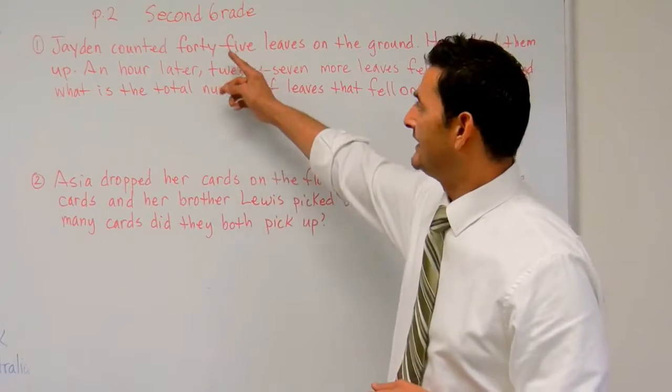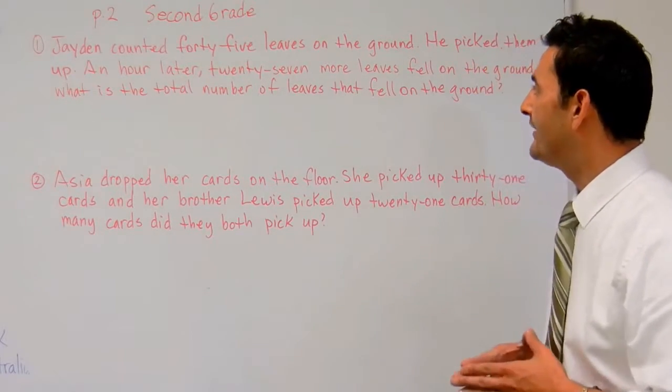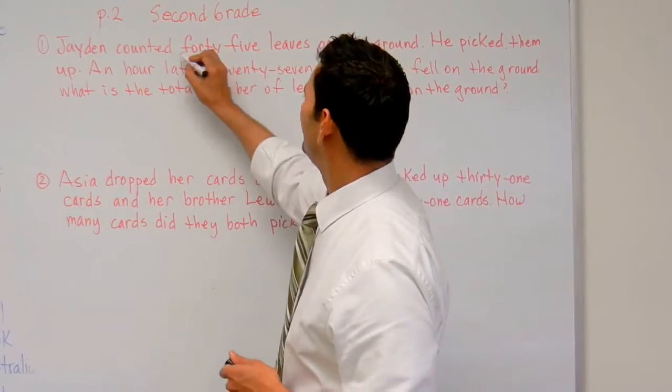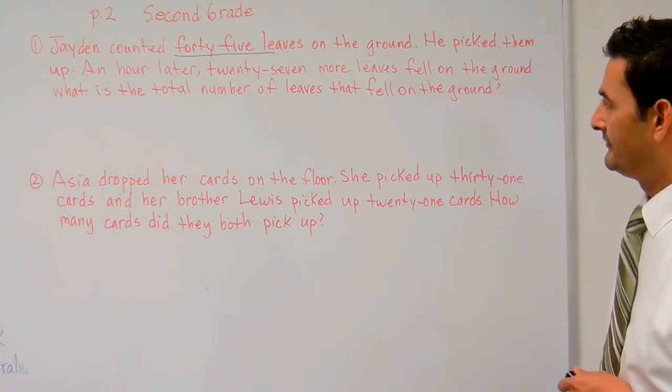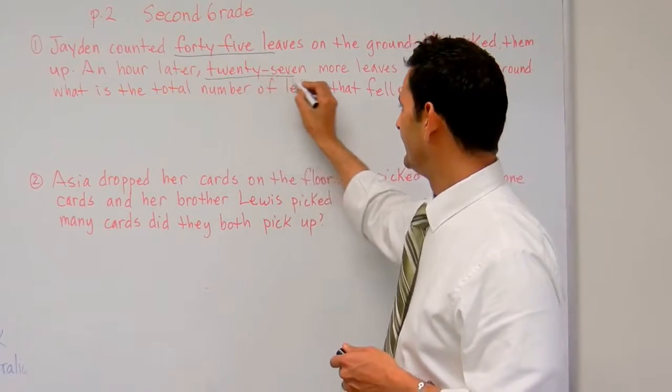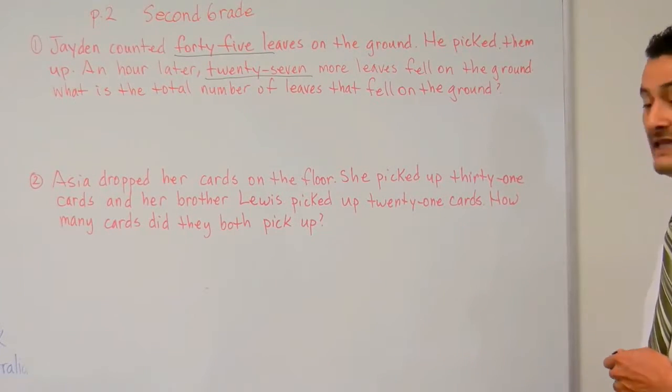So, let's take a look at number one. This says, Jaden counted 45 leaves on the ground. He counted what? 45 leaves on the ground. He picked them up. An hour later, 27 more leaves fell on the ground. What is the total number of leaves that fell on the ground?